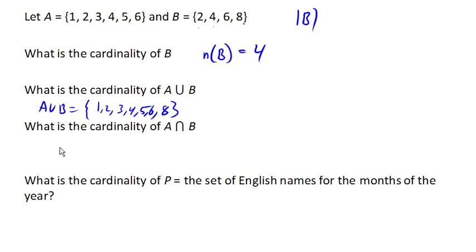And this set has 1, 2, 3, 4, 5, 6, 7 elements. So the number of elements in A union B is 7.